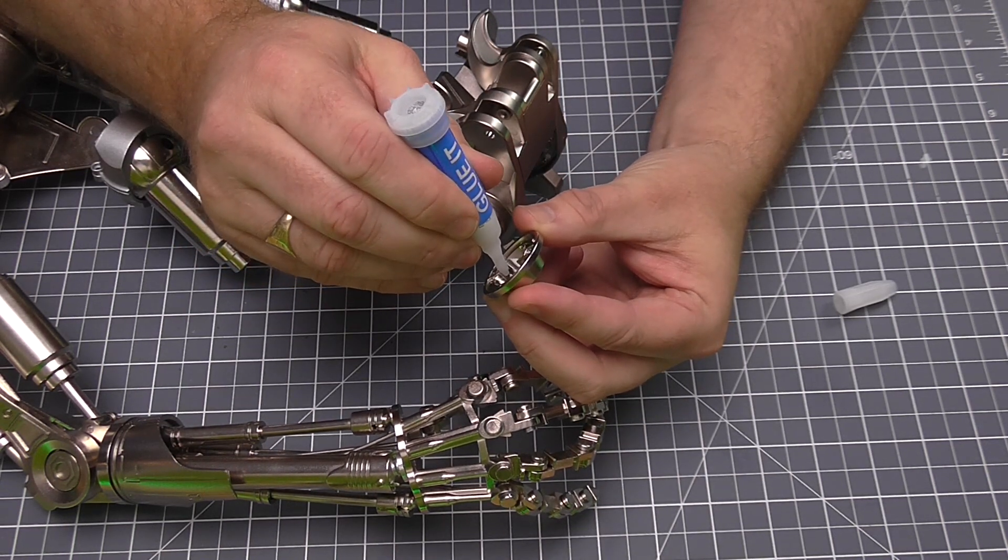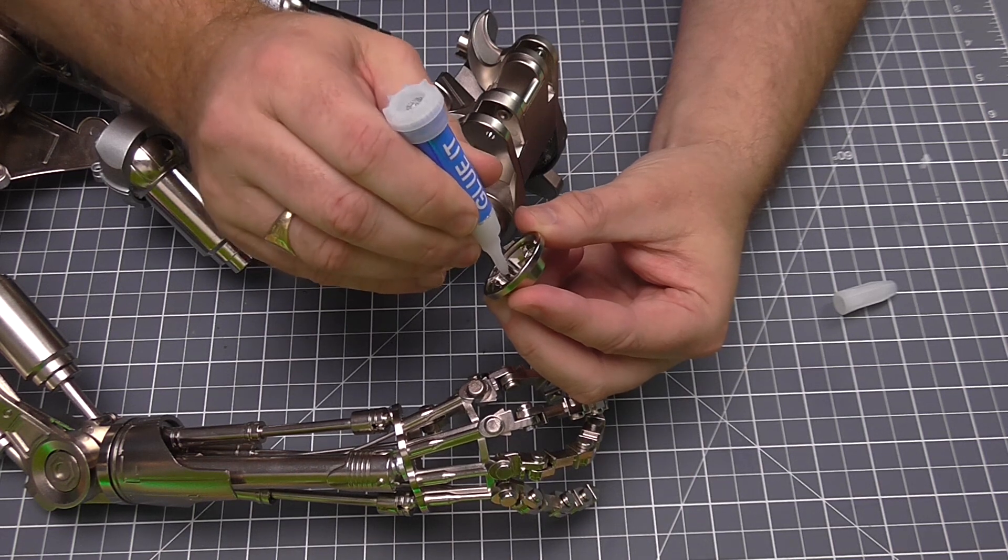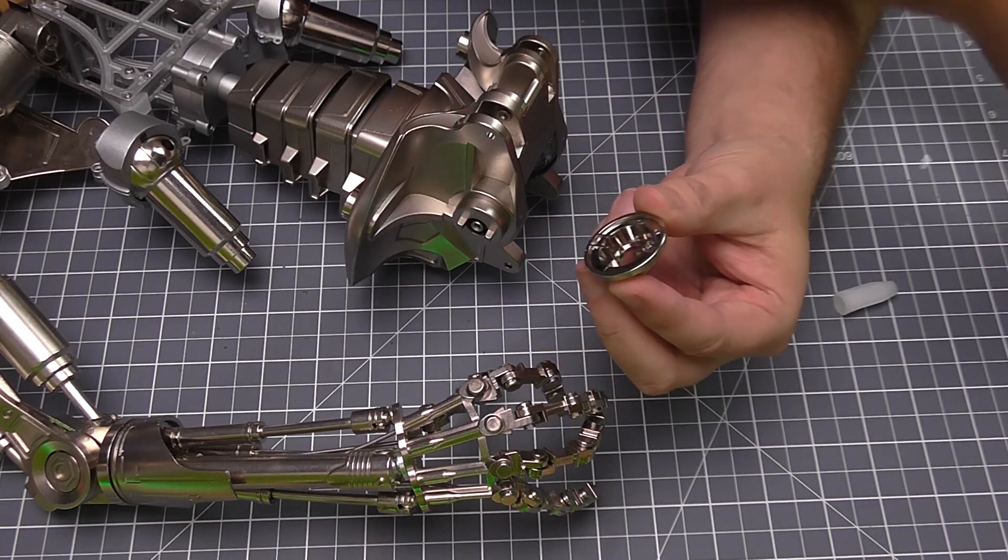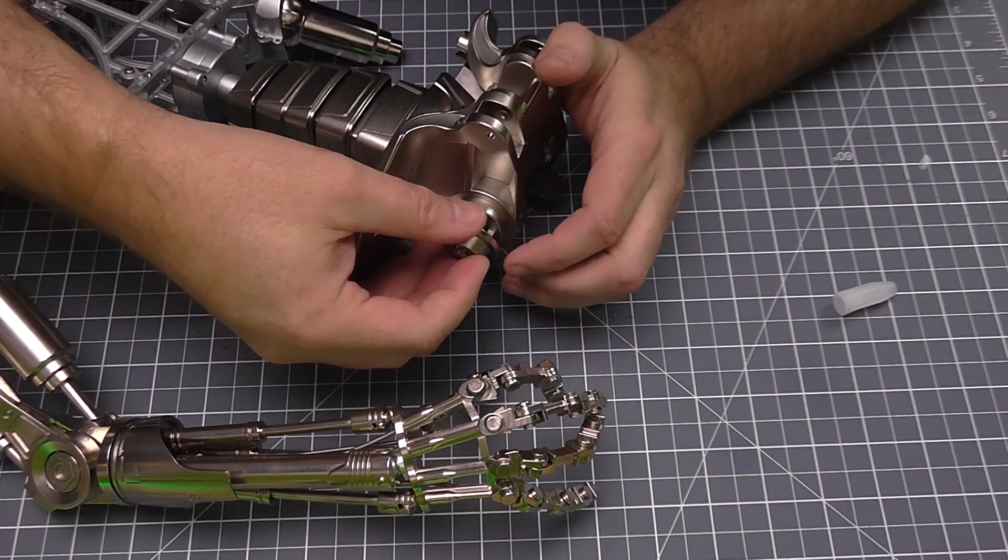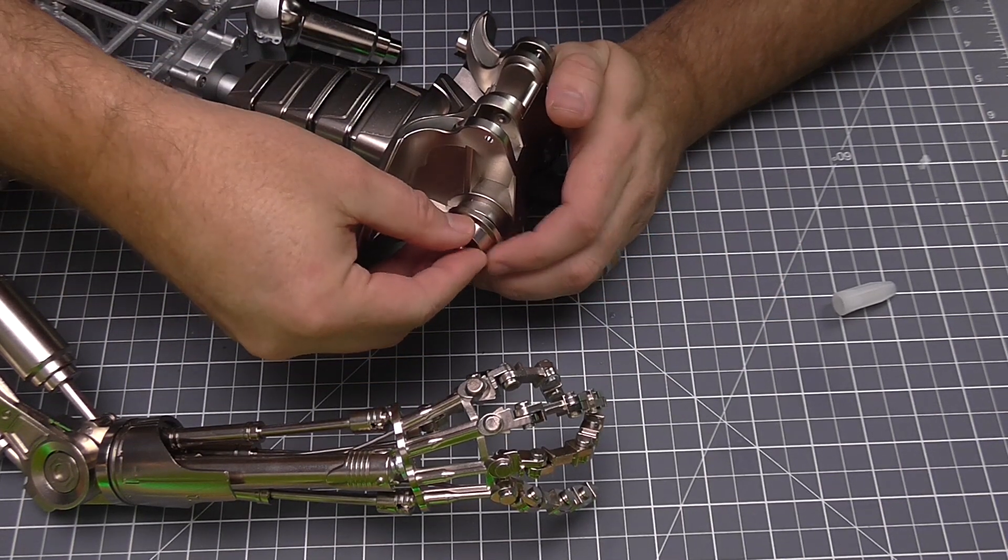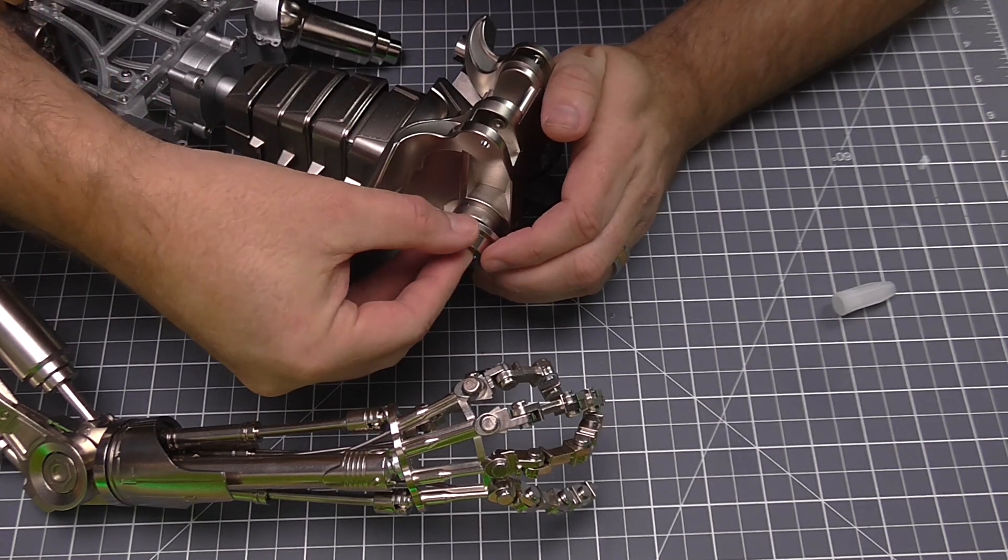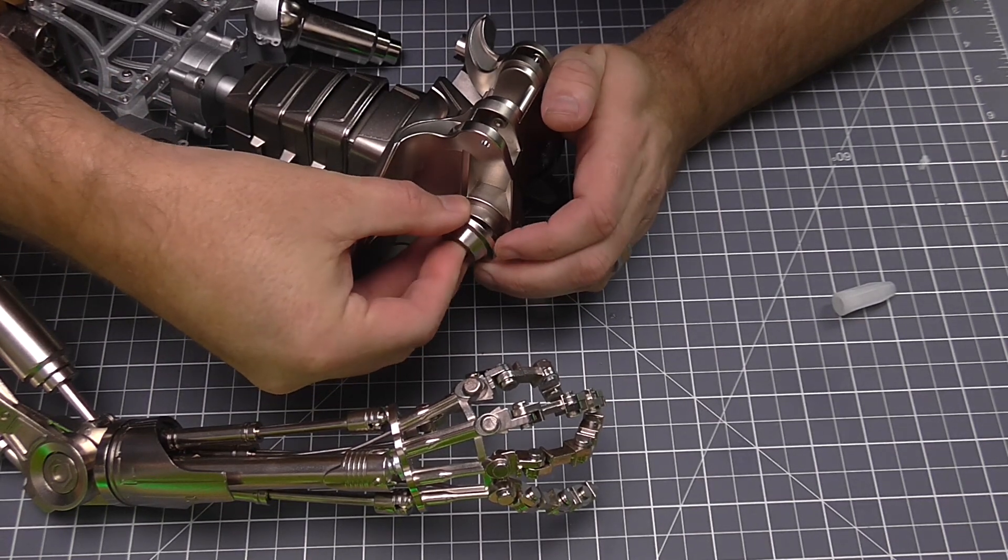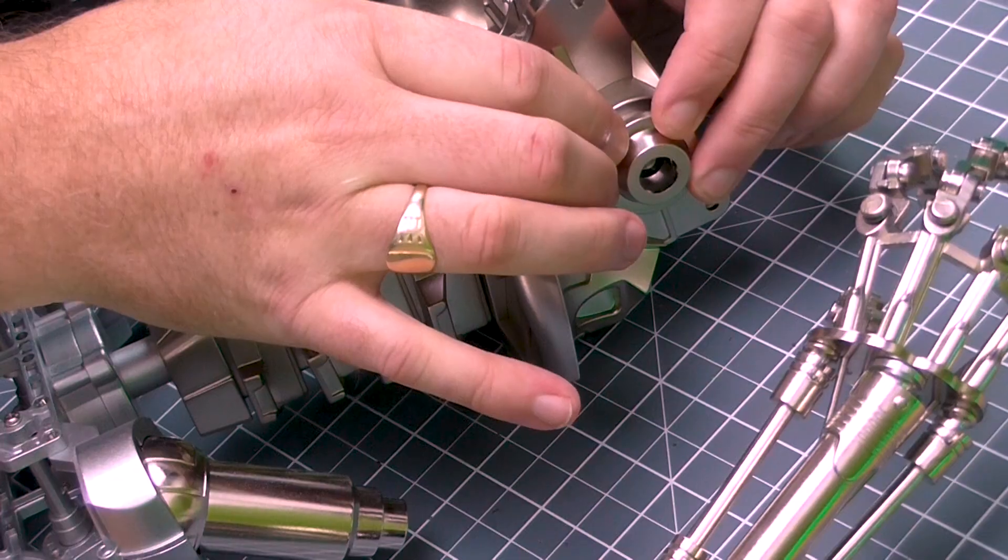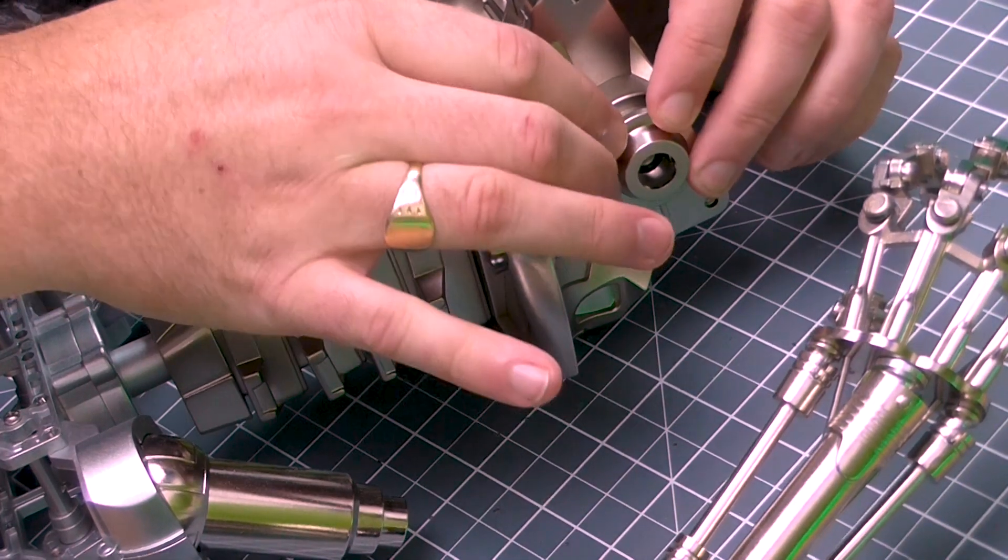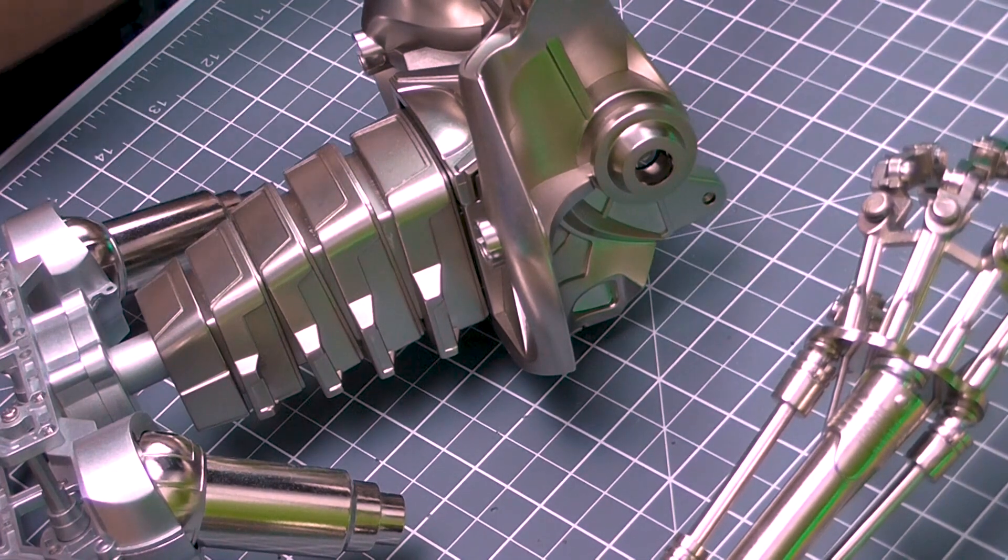Using my cocktail sticks for this because this is going to be attached forever, so it doesn't matter how much glue I put in. Once you've got it in, get this lined up just like that. It will fit nice and flat, just holding it in place. There we go, that's all we've got to do for that part.